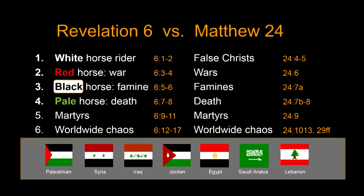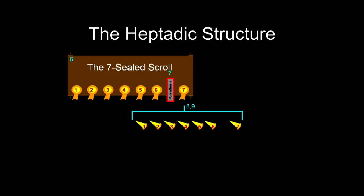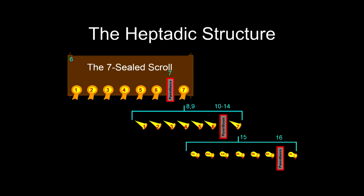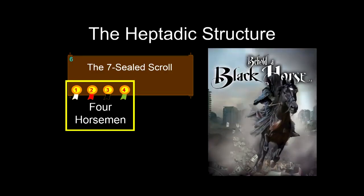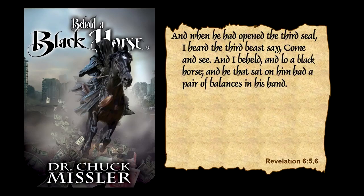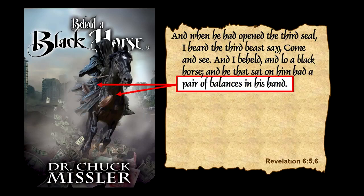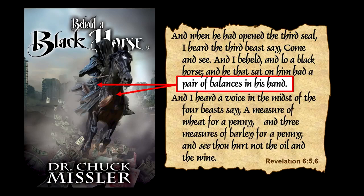One observation I can't resist: the same colors — white, red, black, and pale — are the same colors in bad company. Those are the Muslim colors, strangely enough. So we focus now on the black horse with a pair of balances in his hand. A measure of wheat for a penny, three measures of barley for a penny, and see thou hurt not the oil and the wine — these are descriptions of what we would call inflation.